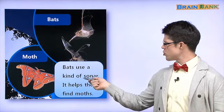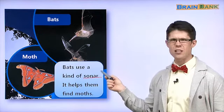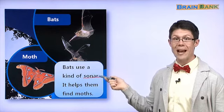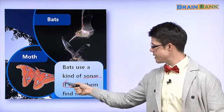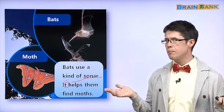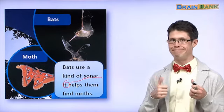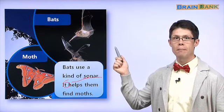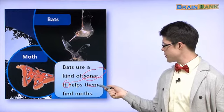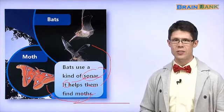Bats use a kind of sonar. It helps them find moths. Okay. Bats use a kind of sonar. What is sonar? Bats use a kind of sonar. It helps them find moths. Why do bats find moths? What is sonar? It helps bats find moths. Alright. Find moths. What is sonar?